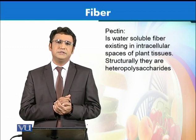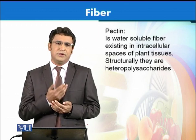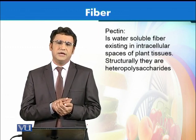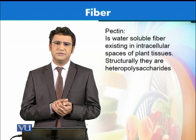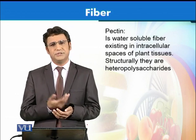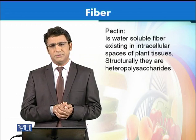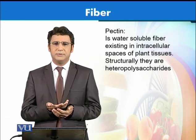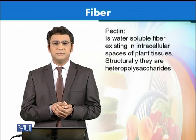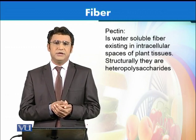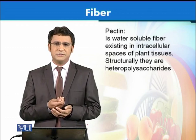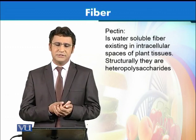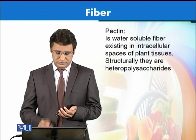Another important polysaccharide is pectin. Pectin has a lot of industrial applications — most jams and preserves are produced using pectin. Pectin is found in almost all plants, like cellulose, but it is found in the interstitial or intercellular spaces of the plants.